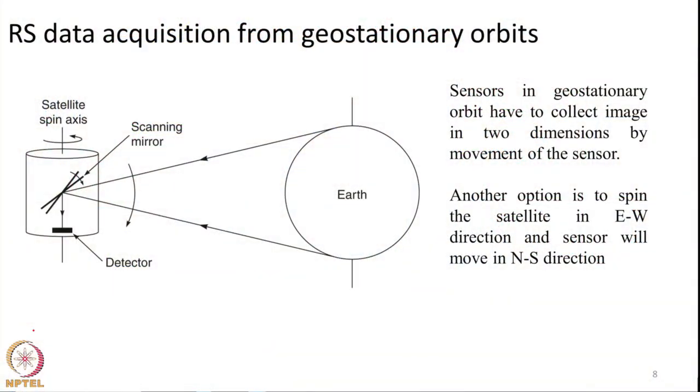In such cases, in order to build a two-dimensional image, there should be a 2D scanning mechanism — that is, the detector element should have a scanner which scans in both the north-south direction and also the east-west direction. First the scanning will happen in one direction, and then scanning will happen in the other direction, so the scanner essentially does a two-dimensional image collection, as depicted in this particular figure. You can see there is a scanning element which scans in both north-south and east-west.